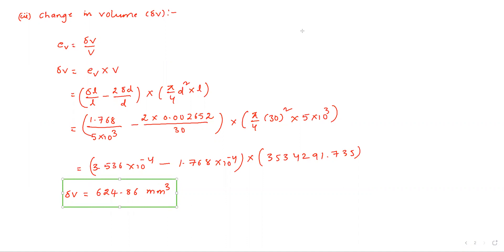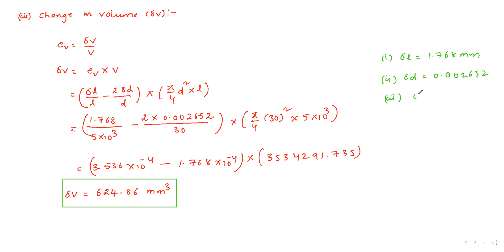Let me write all the answers. First, δL = 1.768 mm. Second, change in diameter δD = 0.002652 mm. Third, change in volume δV = 624.86 mm³. These are the final answers.